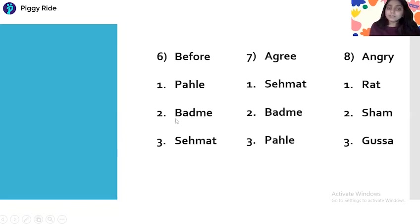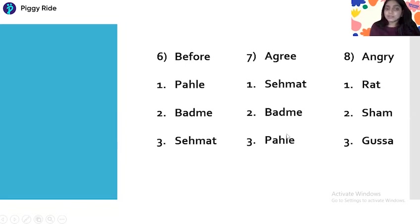This word — After — means Badme in Hindi. After means Badme. Agree means Sehmat, as I just told you, and Pehle you already know means Before. Sehmat is the Hindi form of Agree. Gussa means Angry in English, and Raat means Night.